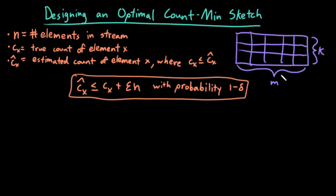I want to find the optimal values of k and m. And specifically, what does optimal mean? Well, I want my estimated count—which is definitely going to be greater than or equal to my true count—but I want my estimated count to be less than or equal to my true count plus some additional upward range, where n here is the total number of elements in the stream, and epsilon here is just some upper bound scaling factor.